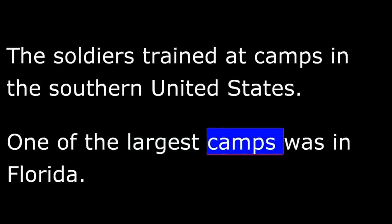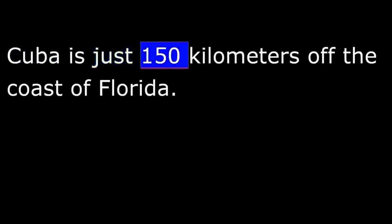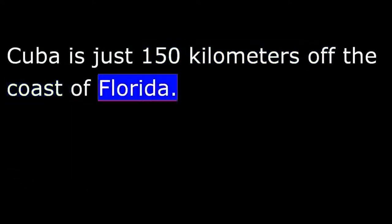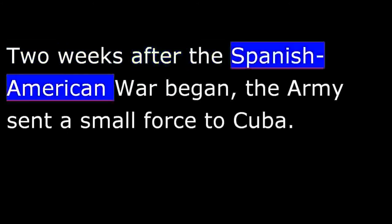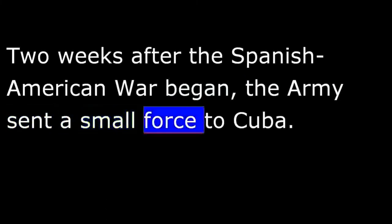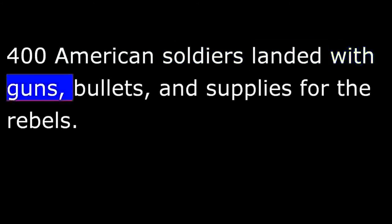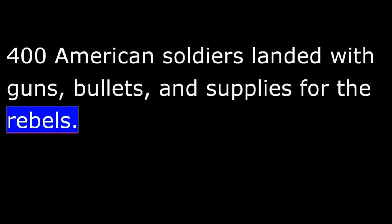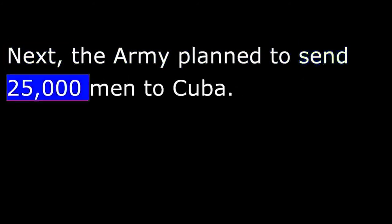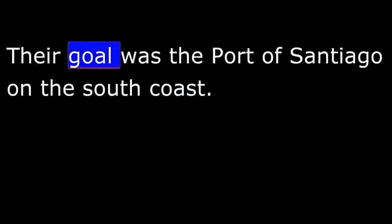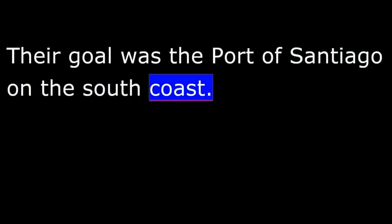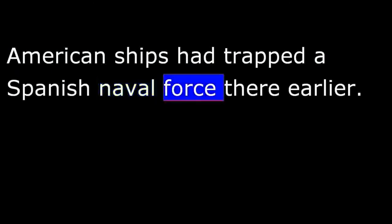One of the largest camps was in Florida. Cuba is just 150 kilometers off the coast of Florida. Two weeks after the Spanish-American War began, the army sent a small force to Cuba. The force was ordered to inspect the north coast of Cuba and to take supplies to Cuban rebels. That invasion failed, but the second one succeeded. Four hundred American soldiers landed with guns, bullets, and supplies for the rebels. Next, the army planned to send 25,000 men to Cuba, with their goal being the port of Santiago on the south coast. American ships had trapped a Spanish naval force there earlier.